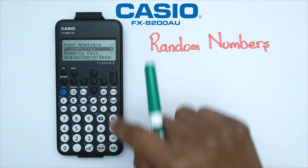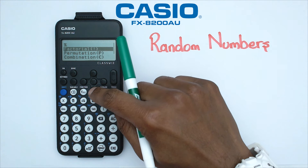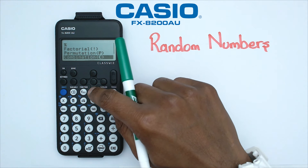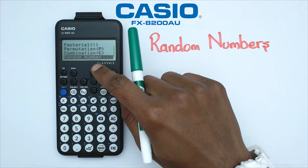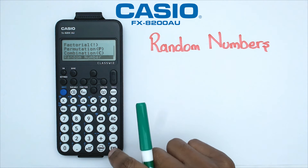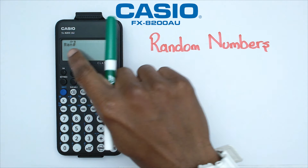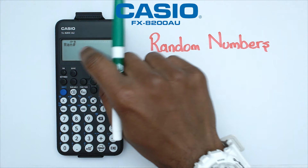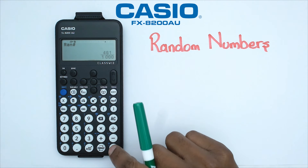Go down to probability and press EXE. Keep going down — we've got factorial, permutation, combination, and then right at the bottom we're going to see random number. Press EXE and the random number function is going to pop up in the typing area.